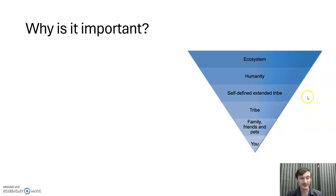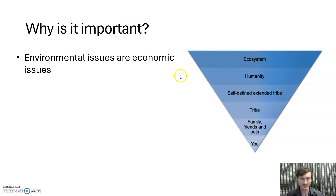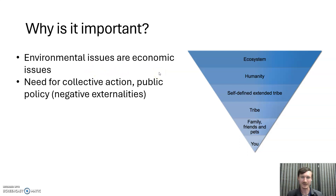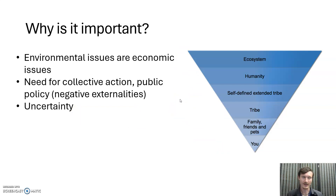To be clear, this is not put together out of a moralistic sense — it's not out of the kindness of anybody's heart. This is just the way the world is put together. So why is environmental science important? Environmental issues are economic issues — these are material issues through and through. Environmental collapse leads to economic collapse. The environment provides the resource base for everything else. There's a need for collective action on problems that cannot be solved by an individual, and for public policy — a lot of this has to do with managing negative externalities. We've got a lot of uncertainty in the world, and this framing can help us make decisions in light of what we don't know, so we can still come to the right conclusion and take the right action.